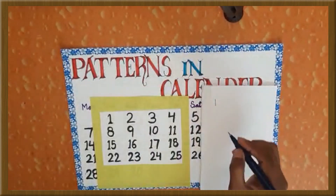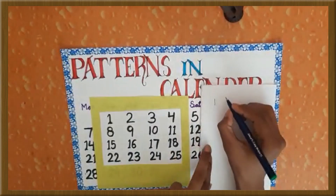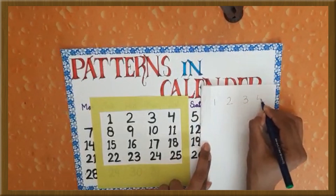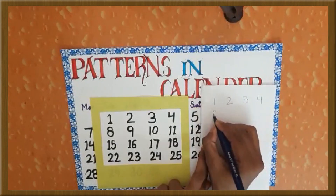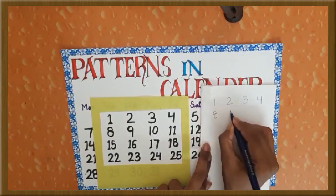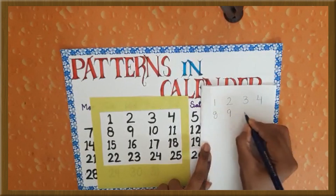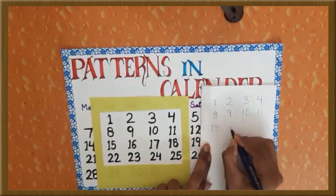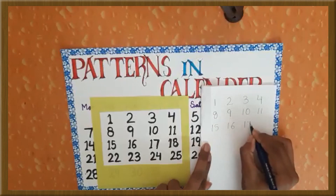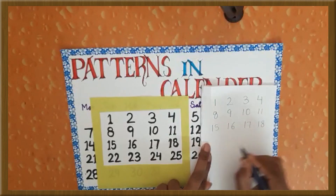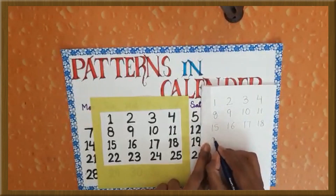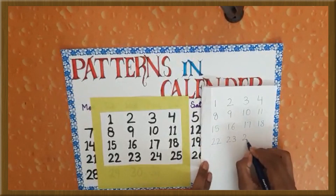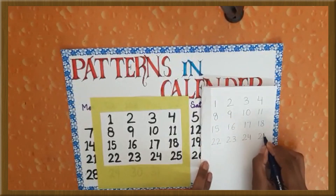Let's make this pattern on the sheet: 1, 2, 3, 4, 8, 9, 10, 11, 15, 16, 17, 18, 22, 23, 24, 25. Now let's find the pattern in this square.